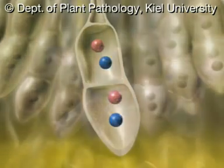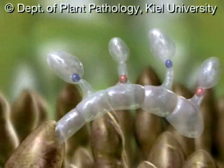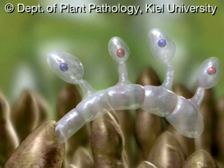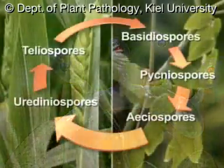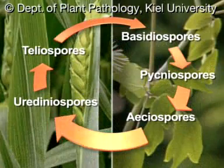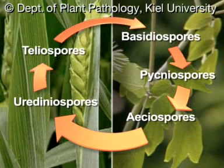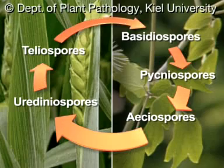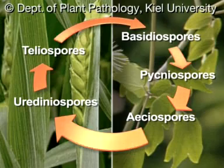The dicaryotic phase ends with the basidia spores, which are once again haploid. So, the complete life cycle of leaf rust includes five spore stages. Puccinia recondita is macrocyclic.